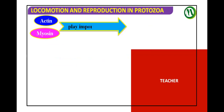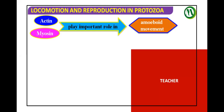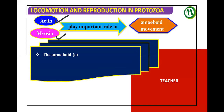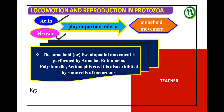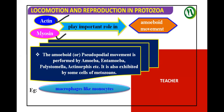Some believe that the conversion of gel into Sol and Sol into gel is not by adding or losing water, but by two types of filaments — actin and myosin. Pseudopodial movement is performed by organisms like amoeba, entamoeba, polystomilla, and actinopolis — all animals having pseudopodia.